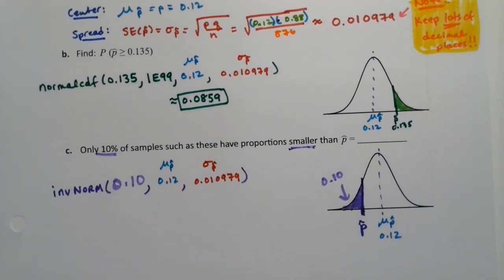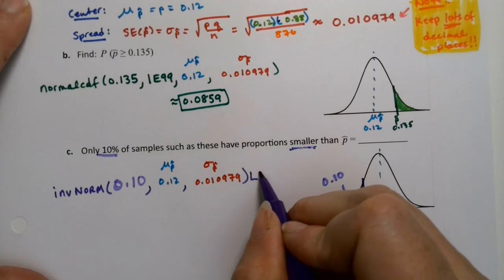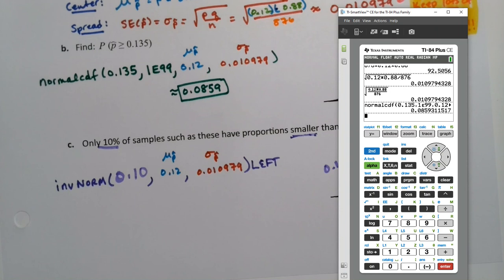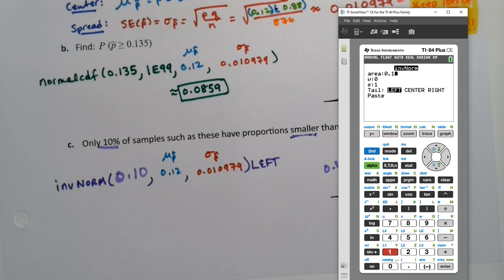And of course, if you're on the newer calculators, you can actually add left to this. But in old calculators, it's automatically left—left is the default. So second distribution, number three, 0.1, 0.12, 0.010979, left, paste, and there we have it: 0.1059.